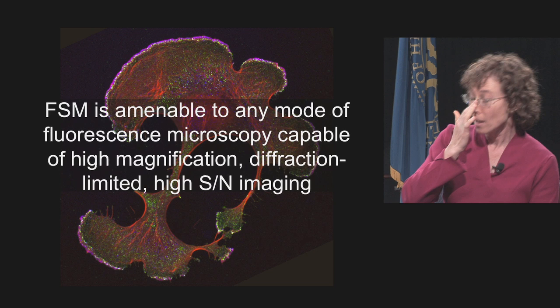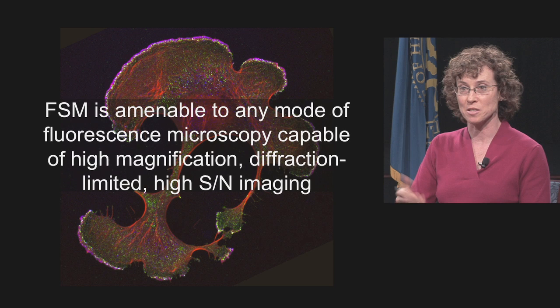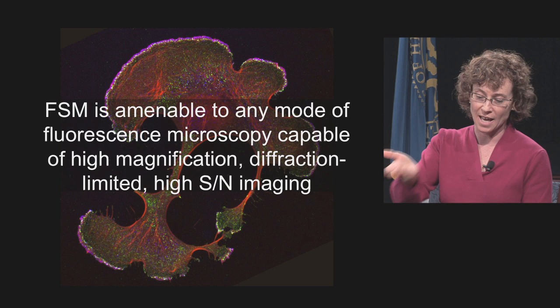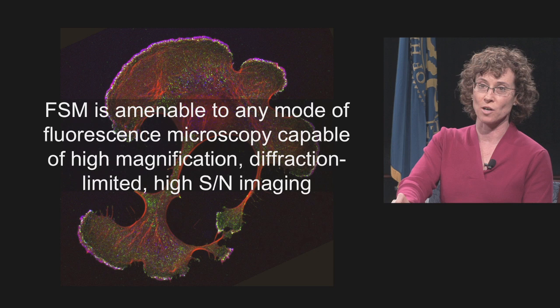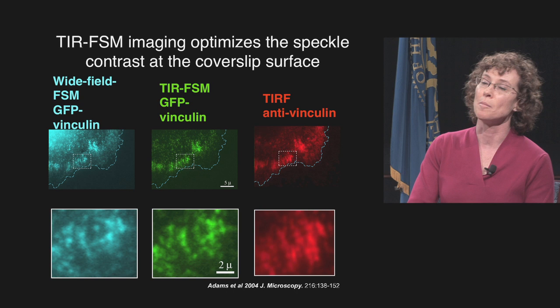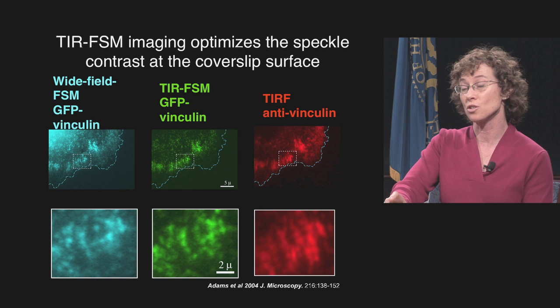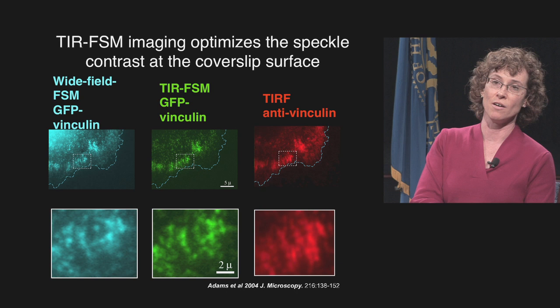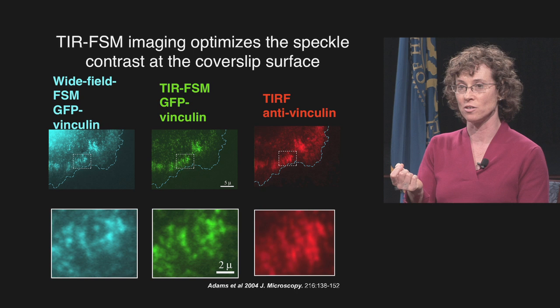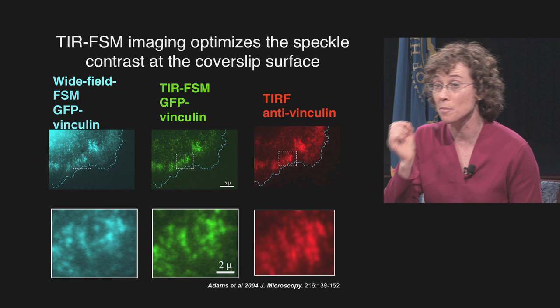Speckle microscopy is really not about the microscope — it's about the specimen. Any mode of fluorescence microscopy satisfying these basic hardware requirements can be combined with speckle microscopy. For example, total internal reflection fluorescence combined with speckle microscopy gives very high contrast at the coverslip surface. Comparing wide-field versus TIRF speckles, you can see higher speckle contrast because TIRF provides a higher contrast image at that specific region of the specimen.